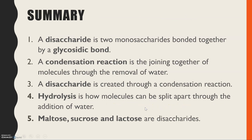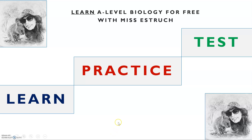In summary: a disaccharide is two monosaccharides bonded together, held by a glycosidic bond. A condensation reaction is the joining together of molecules through the removal of water, and a disaccharide is created through a condensation reaction. Hydrolysis is how molecules can be split apart through the addition of water. The three disaccharides you needed to know were maltose, sucrose, and lactose. You can click back to the monosaccharide video, jump ahead to polysaccharides, or go on to the practice or test stage if you're ready.